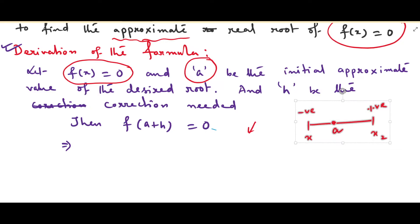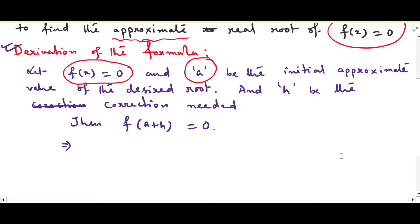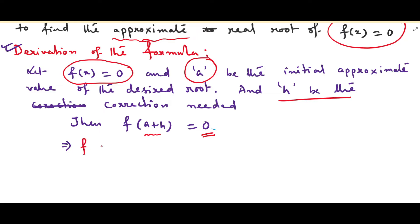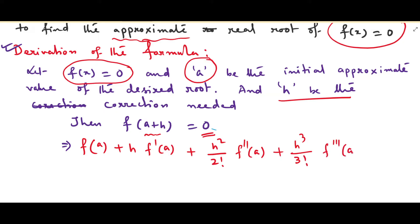We don't need h in examples, but to derive the formula we use it. Since a + h is the root, f(a + h) = 0. Expanding the left side using Taylor's formula gives: f(a) + h·f'(a) + (h²/2!)·f''(a) + (h³/3!)·f'''(a) + ··· = 0. Since h is very small, h² and all higher-order terms are much smaller than h.